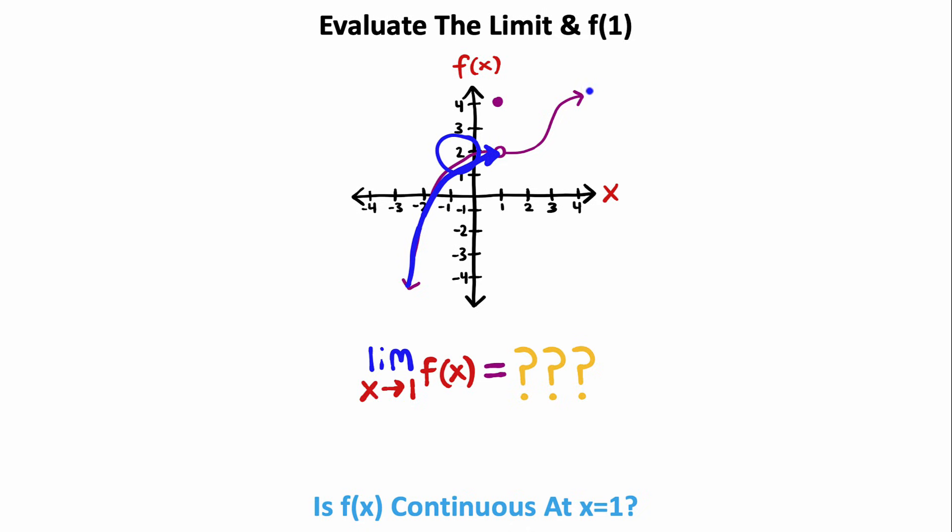And if I approach this from the right side, I can see that I also end up at an output of 2. So that means the solution to our limit is 2. Now, our next step for solving this problem is to evaluate f of 1. I can start at an x value of 1. Now, if I look at our curve, notice there's a hole in the graph right there.